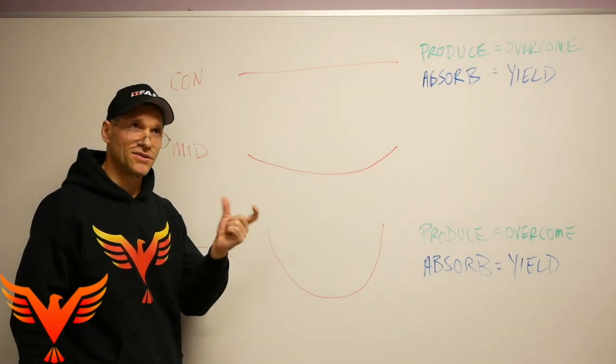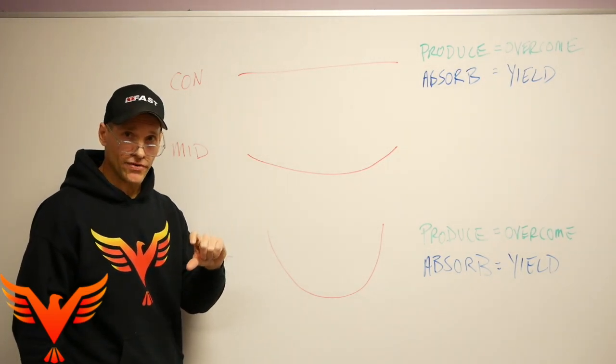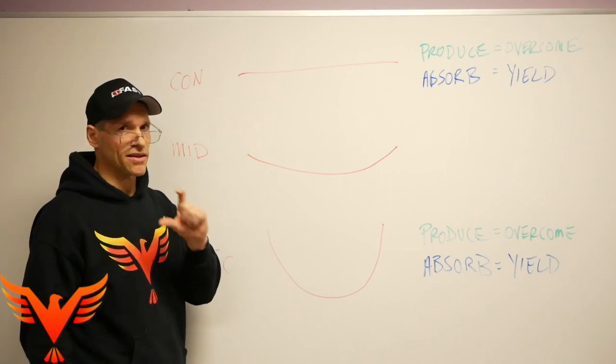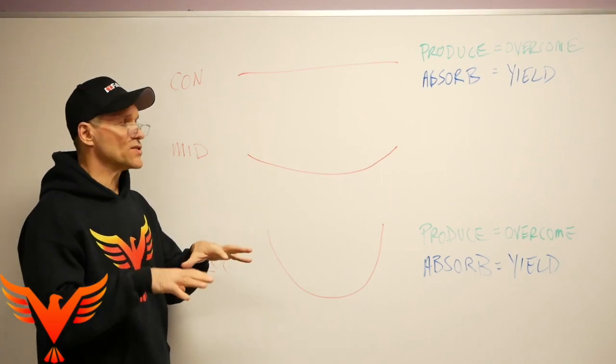So I wanted to clarify the concentric to eccentric yielding versus overcoming element, and I think the pelvic diaphragm is probably the easiest place to represent this and to visualize it.